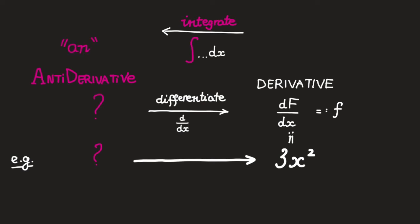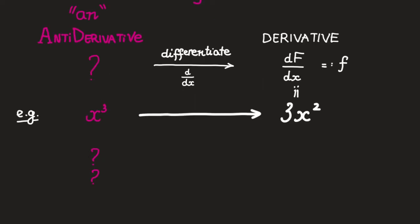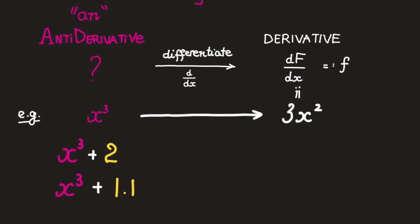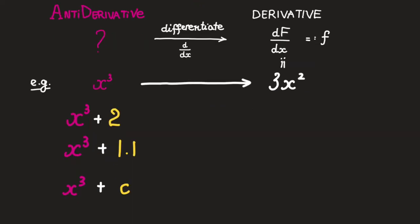Notice that we say an instead of the antiderivative. Why is that? Well, because, as you might have already guessed, there are more than just one function whose derivative is 3x squared. Sure, you know that the derivative of x cubed is 3x squared, but it can't claim the title, the antiderivative of 3x squared, because x cubed plus 2, x cubed plus 1.1, and more generally, x cubed plus any constant, all differentiate to 3x squared. Thus, all of them deserve to be called antiderivatives of 3x squared.